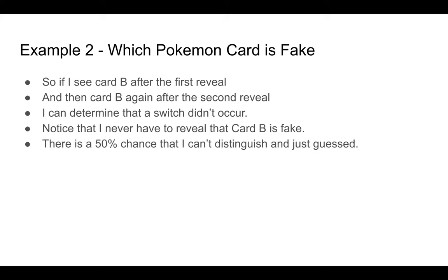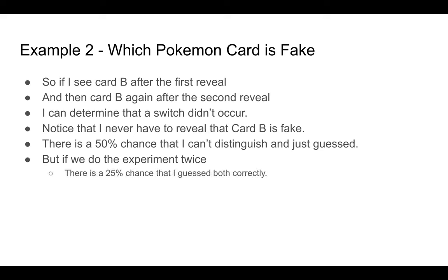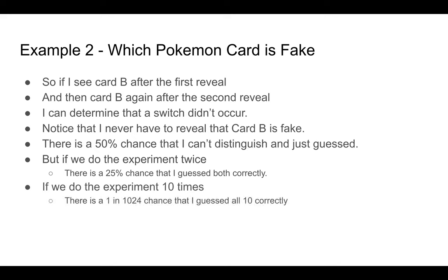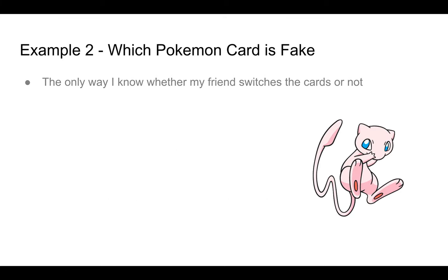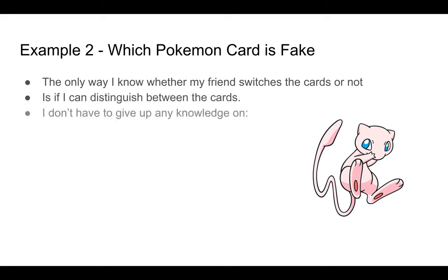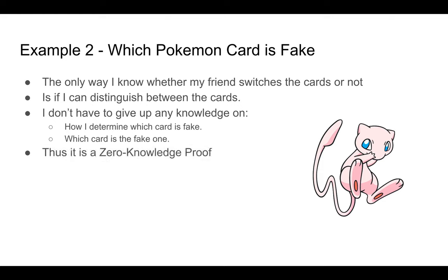Now, there is a 50% chance that I can't distinguish and that I just guessed correctly. But if we do the experiment twice, then there's only a 25% chance that I guessed both times correctly. And if we do the experiment 10 times, then there's a 1 in 1,024 chance that I guessed all 10 correctly. The more we do this experiment, the more confident my friend will be in my ability to distinguish between the cards. The only way I know whether my friend switches the cards or not is if I can distinguish between the cards. I don't have to give up any knowledge on how I determine which card is fake. Thus, this is a zero-knowledge proof.